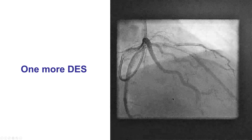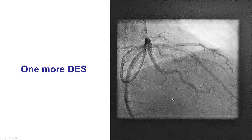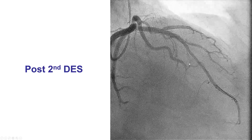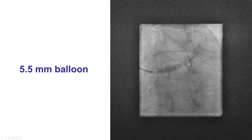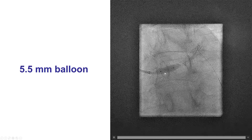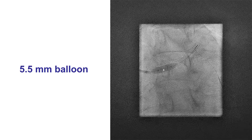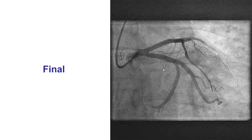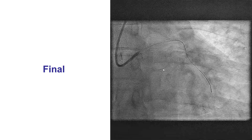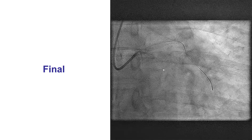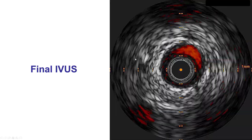Instead, we placed another stent to cover the uncovered part of the lesion in the proximal to mid-LAD, which provided a nice result. We then did post-dilatation of the left main using a 5.5 mm balloon. This exceeds the supposedly upper limit of expansion of the Xience stents, but we felt we had no choice. After doing that, we had a nice result geographically with TIMI flow into the LAD as well as the circumflex and the left main.